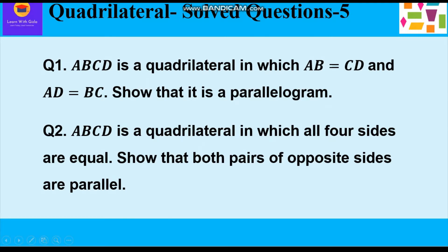In the first question, we are given a quadrilateral in which opposite sides are equal and we have to show that it's a parallelogram. In the second question, a quadrilateral is given in which all four sides are equal and we have to show that both pairs of opposite sides are parallel — so basically it is also a parallelogram, and a parallelogram with all sides equal is a rhombus. That is the difference between both the questions.